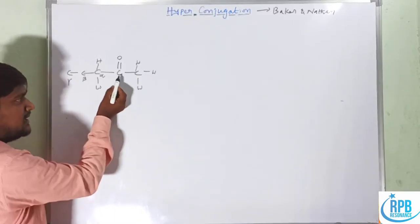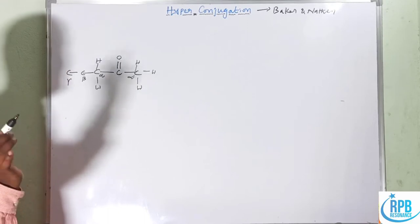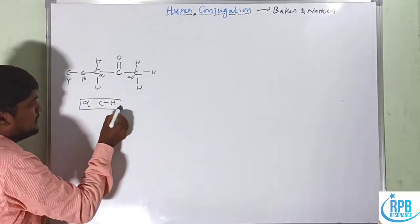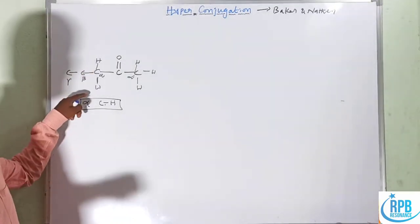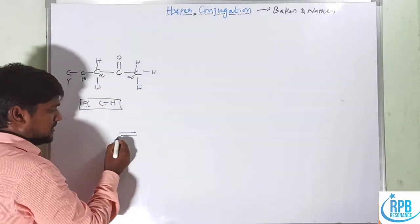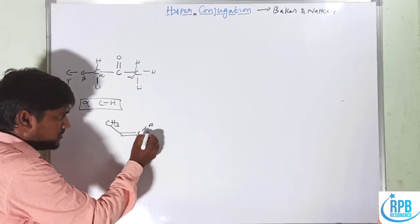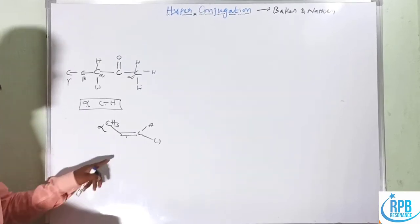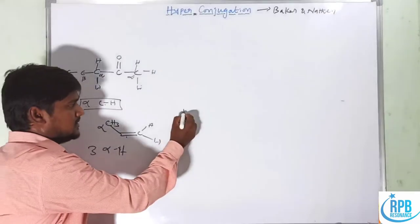Either on the left side or right side, the carbonyl-adjacent position is called alpha. The alpha carbon has at least one C–H sigma bond. Those C–H sigma bonds on the alpha carbon are called alpha C–H sigma bonds. For alkenes, the carbon adjacent to the double bond is called alpha, and the hydrogens on that alpha carbon are the alpha hydrogens.